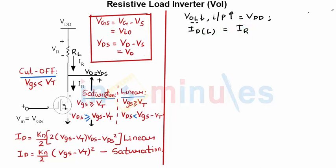Let's write the equation of the current in the linear region, it's there on the left hand side of the screen. KN by 2 times (2(VGS minus VT) times VDS minus VDS squared) is equal to current flowing through the resistor which is nothing but (VDD minus VOUT) upon RL.